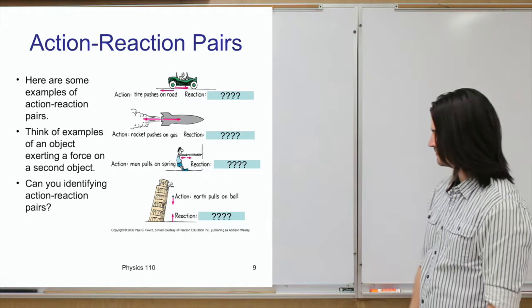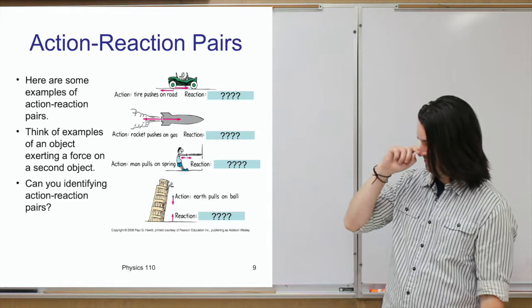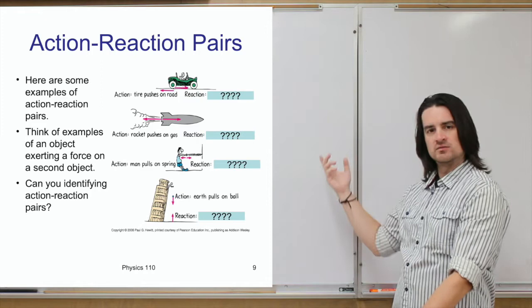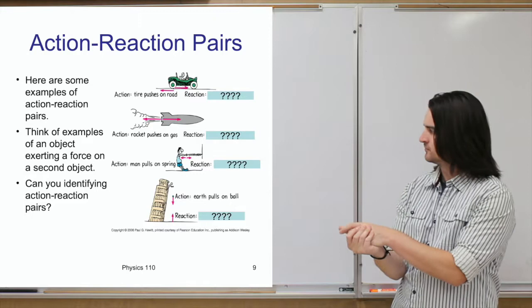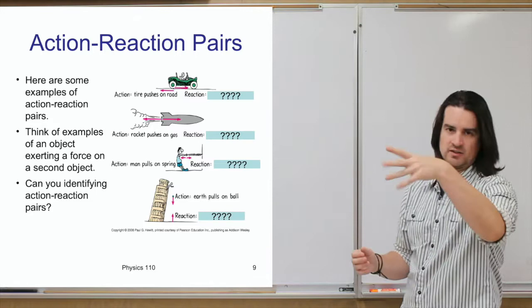Another example: the Earth pulls a ball downward as it falls — that's the action force of Earth's gravity. The reaction force is that the ball is actually pulling up on the Earth. It just so happens that the Earth is incredibly massive, so that reaction force amounts to almost no acceleration of the Earth. You don't change the Earth's motion at all by releasing objects in the air.